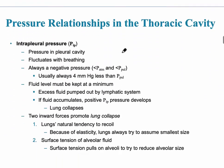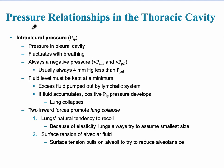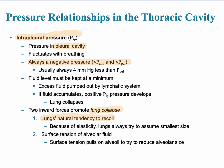The next pressure is the intrapleural pressure, and this is the pressure that's in the pleural cavity, which fluctuates with breathing as well. It's always a negative pressure, usually about 4 millimeters of mercury less than the pulmonary pressure. The two inward forces that promote lung collapse are the lung's natural tendency to recoil because of the elastic tissue — the elasticity — and also the surface tension of the alveolar fluid.